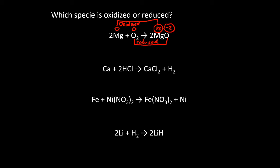Let's do another one. Why don't you give this one a shot on your own — go ahead and pause the video and see if you can work out what's being oxidized and what's being reduced in this chemical reaction. Hopefully you found that calcium has an oxidation number of zero, and so does the hydrogen, because those are both the free elemental forms of those elements. Hydrogen is one of the seven diatomic elements, so H2 is the free elemental form.